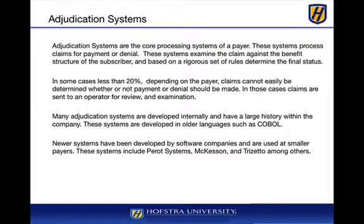Adjudication systems are the core processing system for the payer. They are generally giant rules-based engines that examine a claim against the benefit structure of the subscriber's policy and determine the final status. In some cases — less than 20%, probably around 10% to 15% depending on the payer — claims cannot be easily determined for payment or denial, and are sent to an operator for review. Even if denied, there's an appeals and grievances process where the claim is reviewed and adjustments may be made inside the claims adjudication systems. Many of these systems are older, COBOL-based.